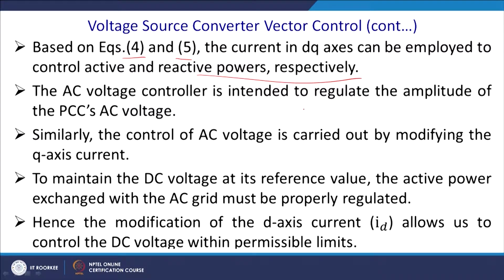The voltage controller is intended to regulate the amplitude of the voltage at the PCC. When you have a voltage disturbance — sag or swell — that enters the control chain. Sag and swell can be controlled by modifying the Q-axis current. For example, if you terminate a load with a capacitor, the terminal voltage will swell up; you then require a change in Q-axis current. In normal healthy conditions, this Q-axis current adjustment is not touched.